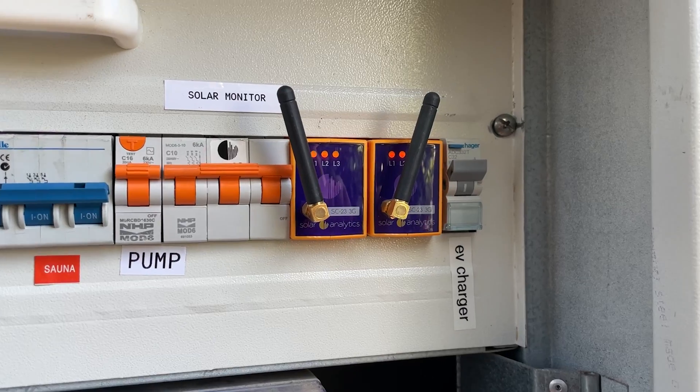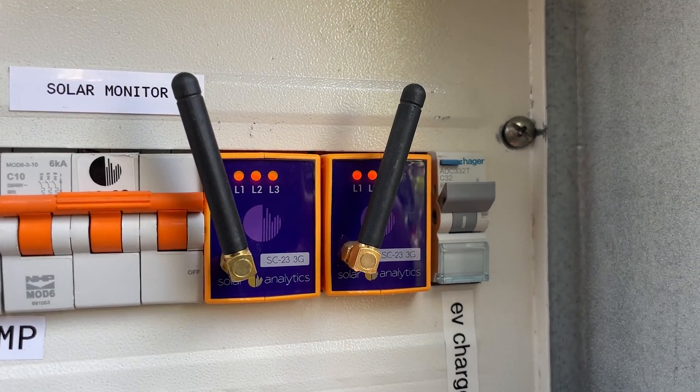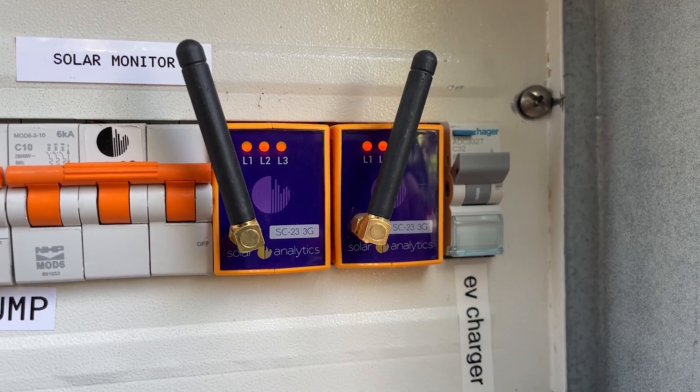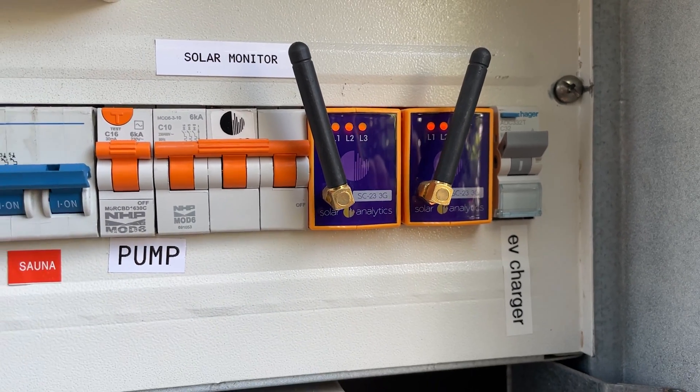To finish off, I want to talk about the importance of having a consumption monitor with your solar system. A consumption monitor is a small box that sits inside your switchboard. It measures how much electricity is coming from or going to the grid. To be clear, you absolutely can install a solar system without a consumption monitor and it will work but I strongly recommend getting one.